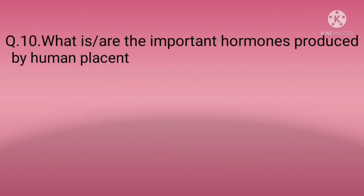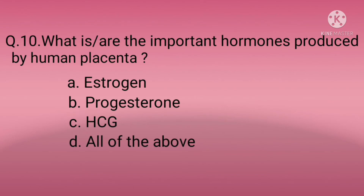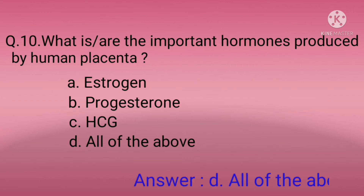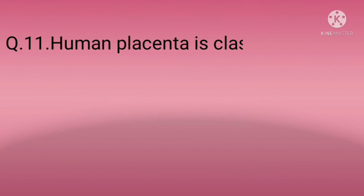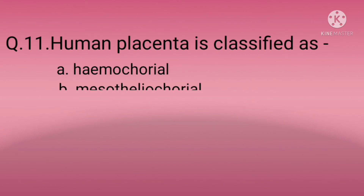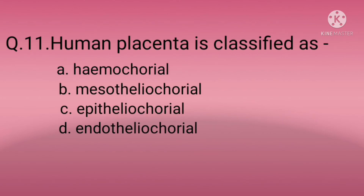Question ten: What are the important hormones produced by the human placenta? Option A: Estrogen, Option B: Progesterone, Option C: HCG, Option D: All of the above. The correct option is D — all of the above.